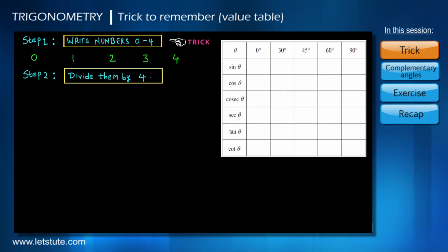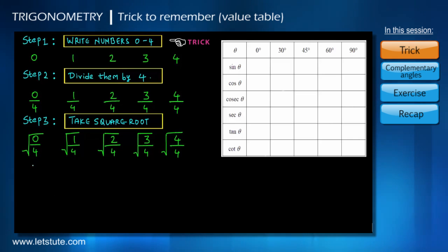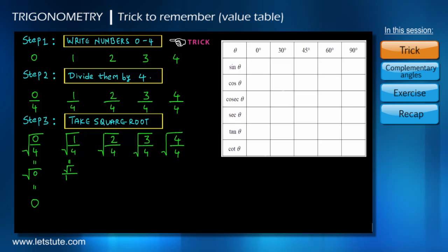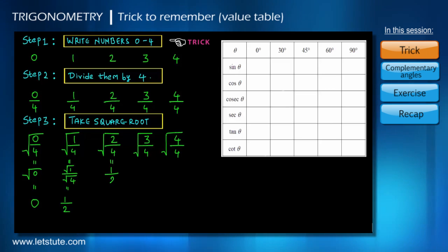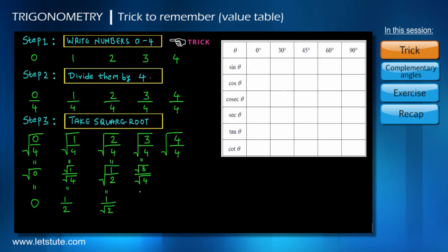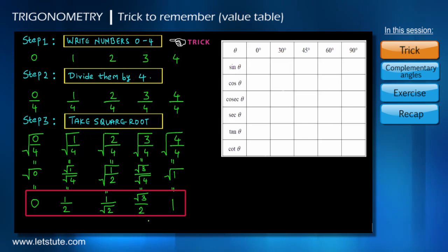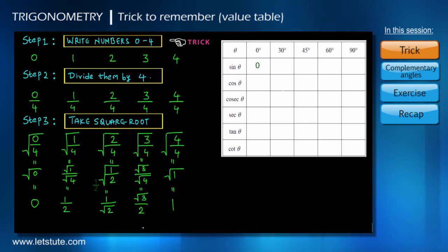In the second step we divide each of these numbers by 4. In step 3 we take the square root. So 0 upon 4 is 0 and the square root of 0 is 0. Square root of 1 upon 4 is 1 upon 2. We can simplify 2 upon 4 as 1 upon 2, and square root of 1 upon 2 is root 2 over 2. Then square root of 3 upon 4 is root 3 upon 2. And square root of 4 upon 4, which is 1, gives square root of 1 equal to 1. We will realize that the values we have got are the values for sine 0°, 30°, 45°, 60°, and 90°.